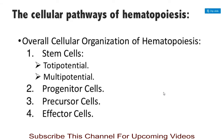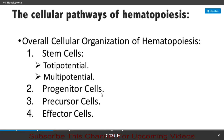The cellular pathways of hematopoiesis include the overall cellular organization, which involves stem cells — further divided into two types: totipotent stem cells and multipotent stem cells — then progenitor cells, precursor cells, and effector cells.